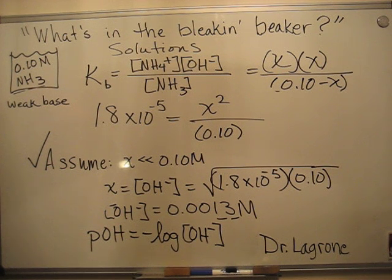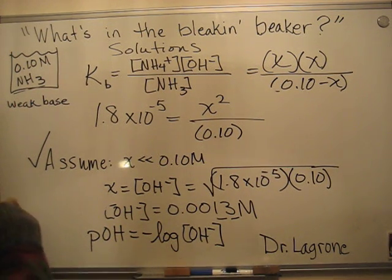If you did that, negative log of 0.0013 rounded to two sig figs, you get 2.89, so the pOH is 2.88.